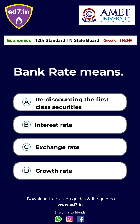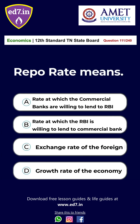Question number 110: Bank rate means — (a) rediscounting the first class securities, (b) interest rate, (c) exchange rate, (d) growth rate. The answer is option (a) rediscounting the first class securities. Question number 111: Repo rate means — (a) the rate at which commercial banks are willing to lend to RBI, (b) the rate at which RBI is willing to lend to commercial banks, (c) exchange rate of foreign, (d) growth rate of an economy. The answer is option (b) the rate at which the RBI is willing to lend to the commercial banks.